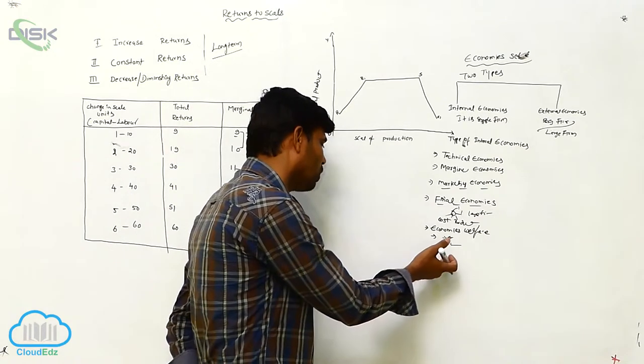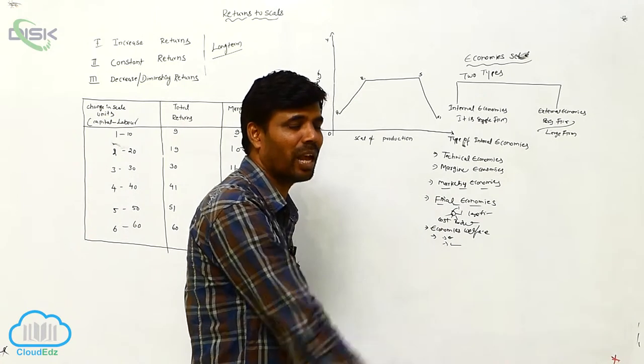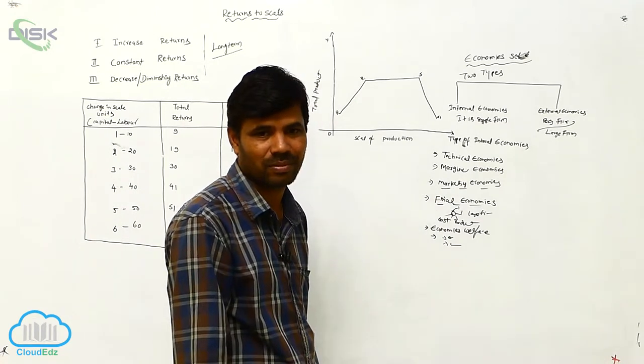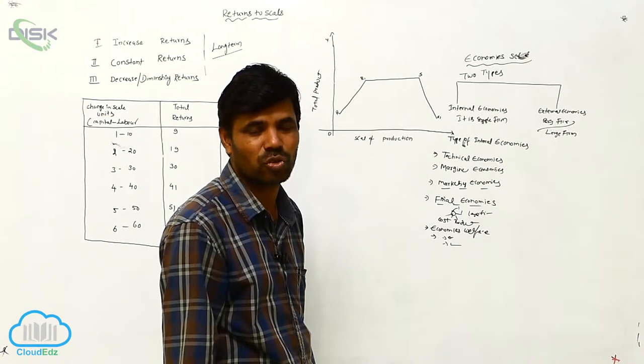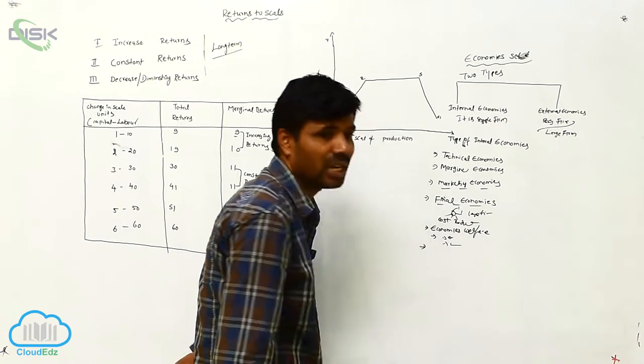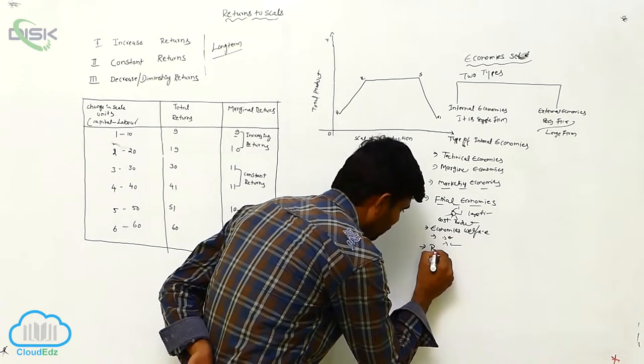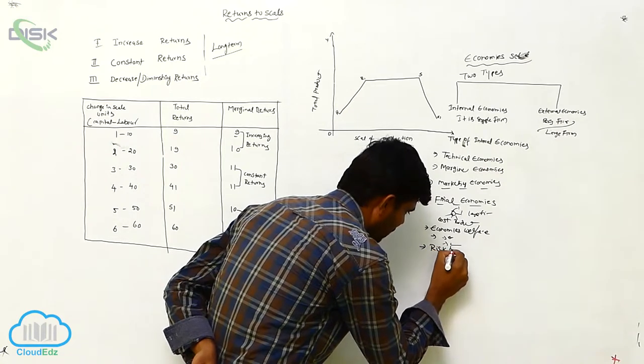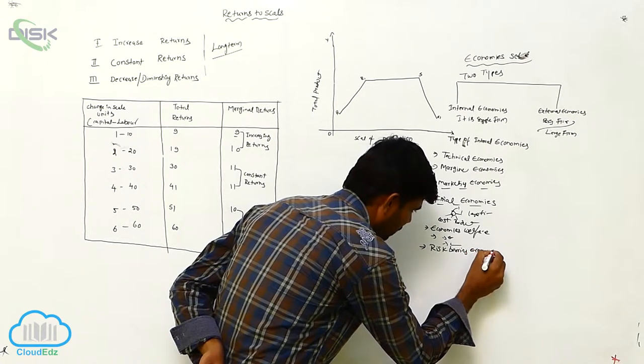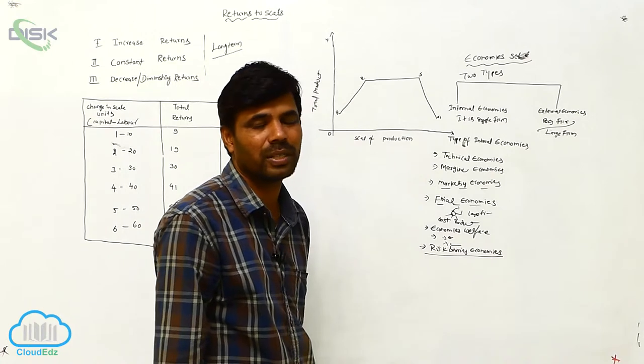How can you go into development? They are always suffering from capital, technology, liabilities, so many reasons. Next is risk-bearing economist.